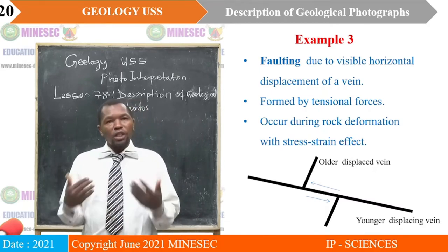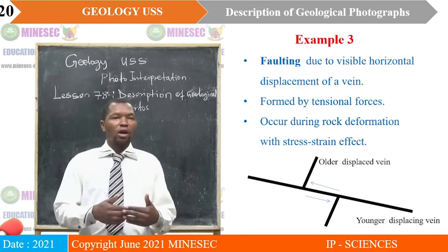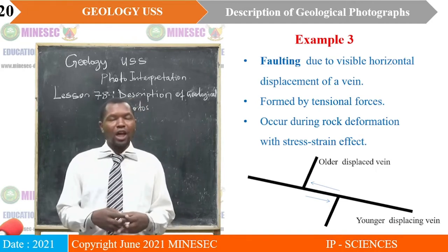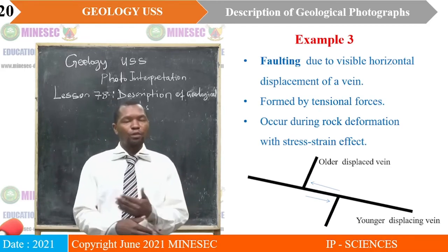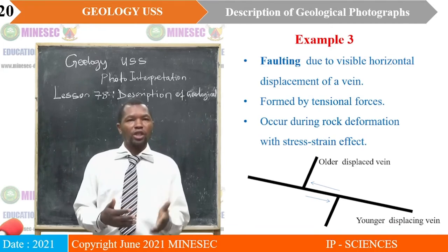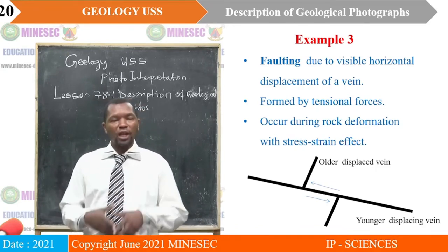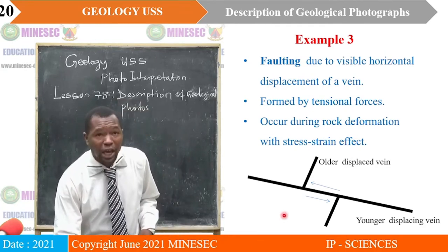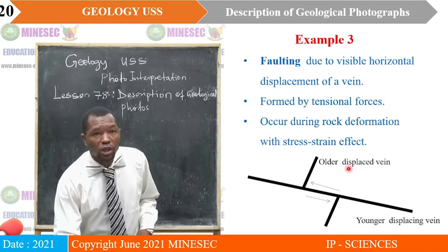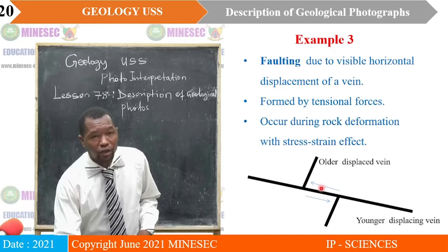It is relative: if you concluded on horizontal displacement, then horizontal displacement is driven by shear forces, while vertical displacement is driven by tensional forces. There are also visible displacements caused by compressional forces. But here, talking about faulting in general, we can establish tensional as well as shear forces. They occur during rock deformation with stress-strain effect. In the diagram, we have the older displaced vein and the younger displacing vein, with arrows along indicating the movement.